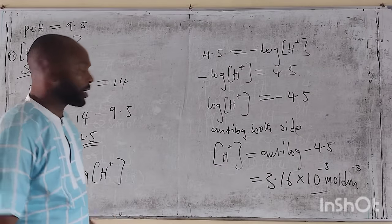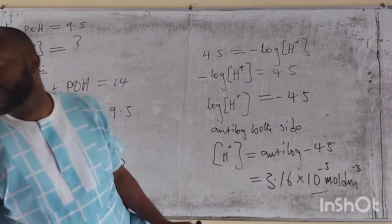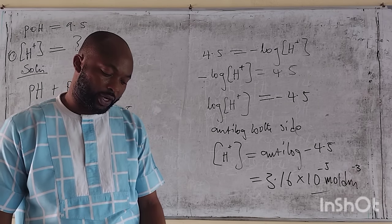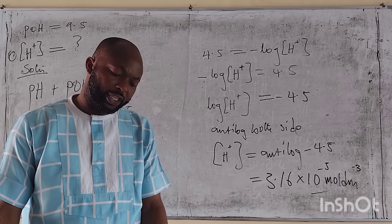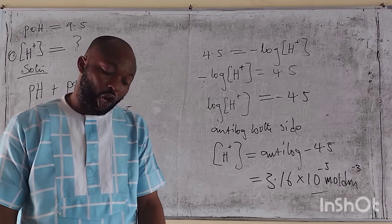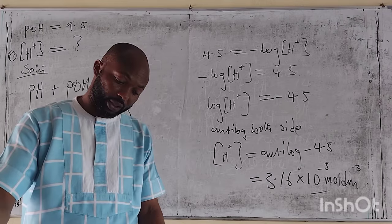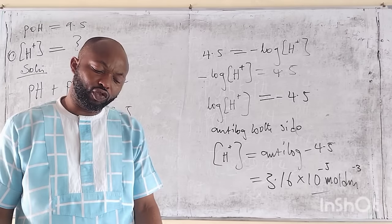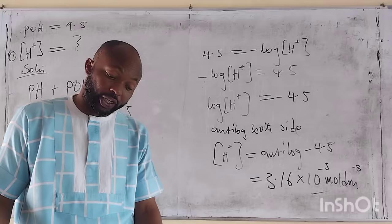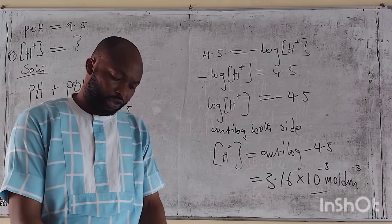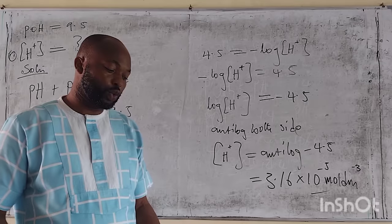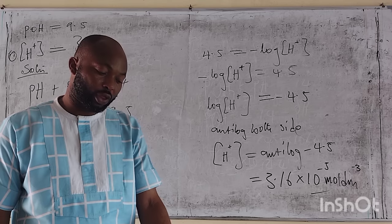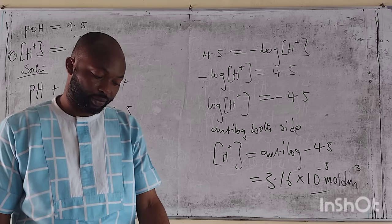Let's take another test question. Question 1A: what is the hydroxide ion concentration in a solution of pOH 3? 1B: what is the hydrogen ion concentration in the same solution? Question 2: what is the pH of a solution whose hydrogen ion concentration is 4 times 10 raised to minus 4 mol per dm³?